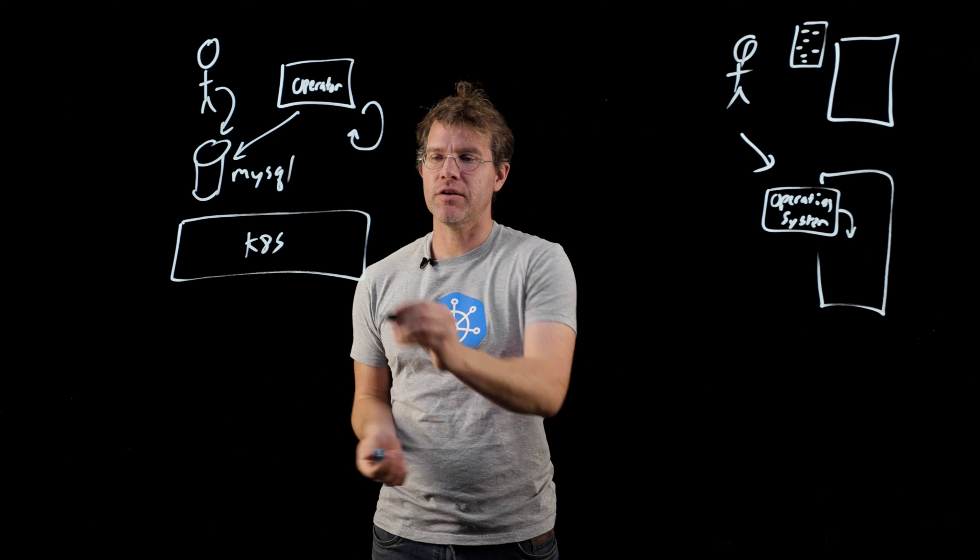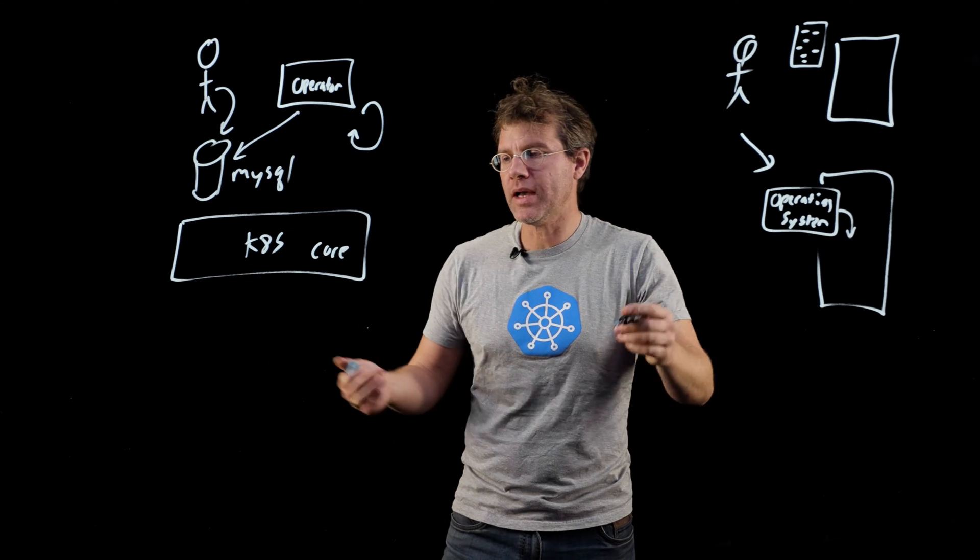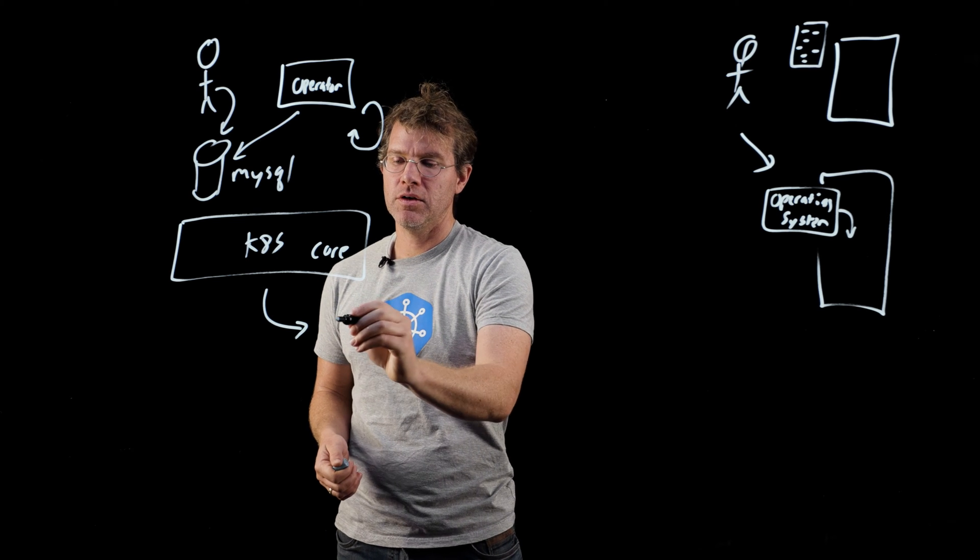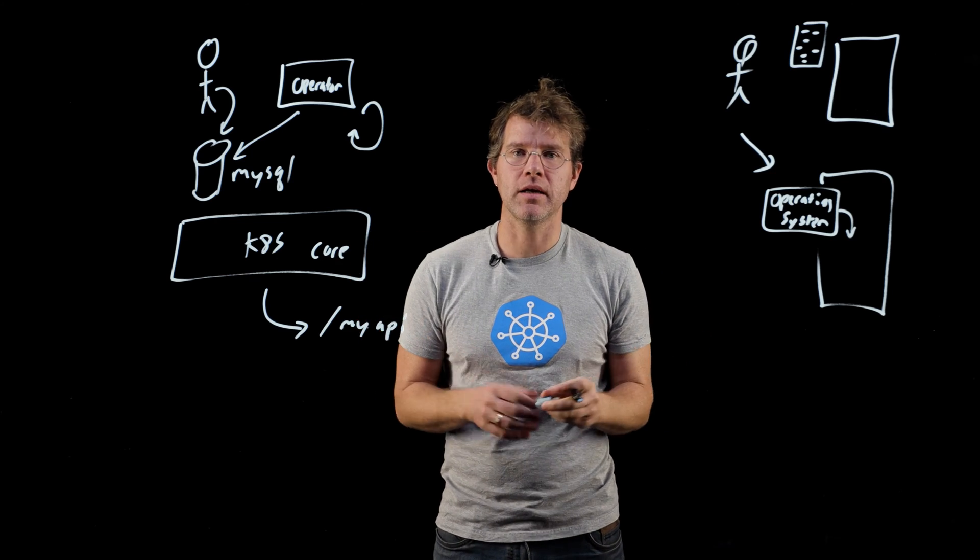Kubernetes has a set of core APIs that are built into the system itself, but it also has a bunch of primitives in it that allow you to add new APIs to the system itself while it's running.